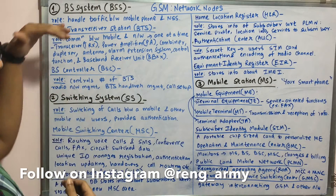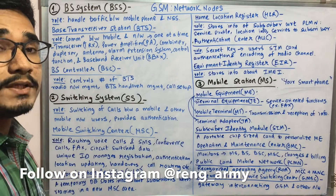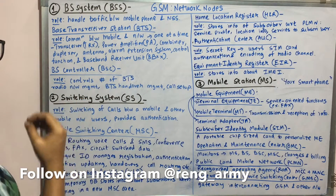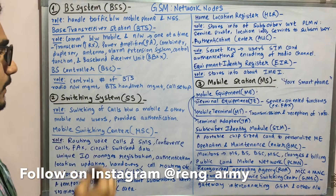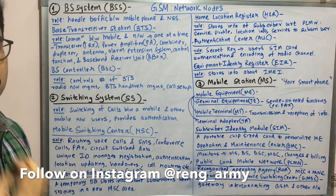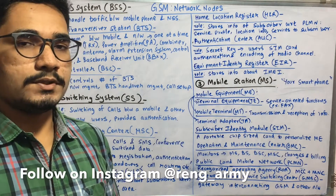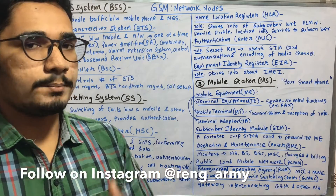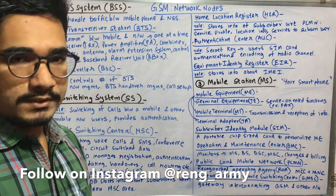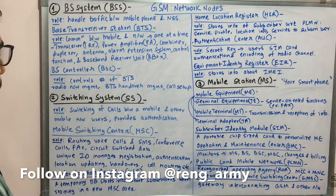Moving on to the second layer, we have the Switching System (SS). Its role is for switching of calls between a mobile and other mobile users. It provides a certain level of authentication because it has databases used for both temporary and permanent storage. We'll be seeing what different databases are included in it.